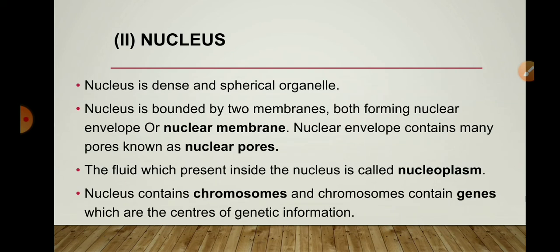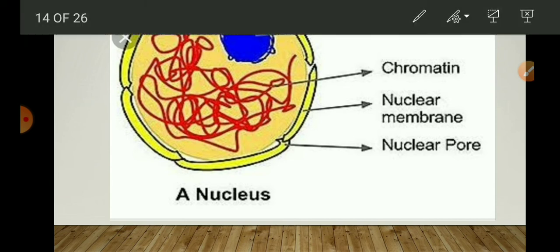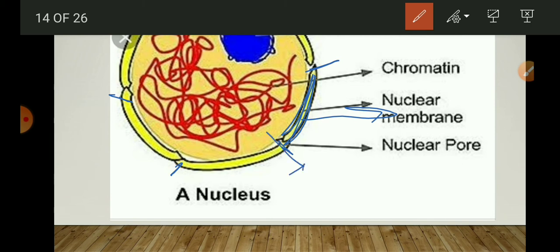The most important organelle is the nucleus — the brain of the cell. It controls all cellular activities and functions of cell organelles. It is a small, round, double-membrane organelle bound by a nuclear membrane. The nuclear membrane contains pores which allow transfer of materials from the nucleus to the cytoplasm. This is the structure of the nucleus with its double membrane called the nuclear membrane, and very small pores — called nuclear pores — are present for transport of materials between the nucleus and the cytoplasm.